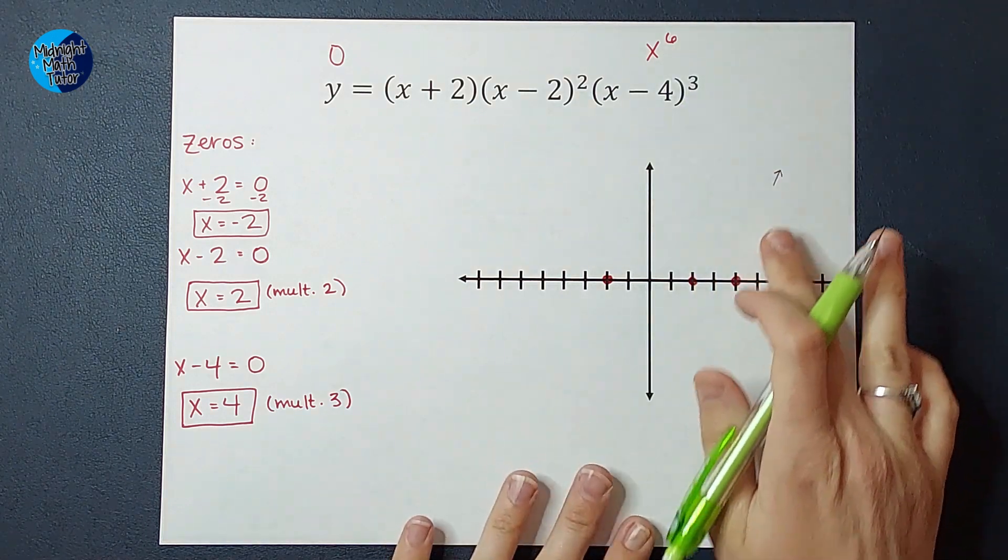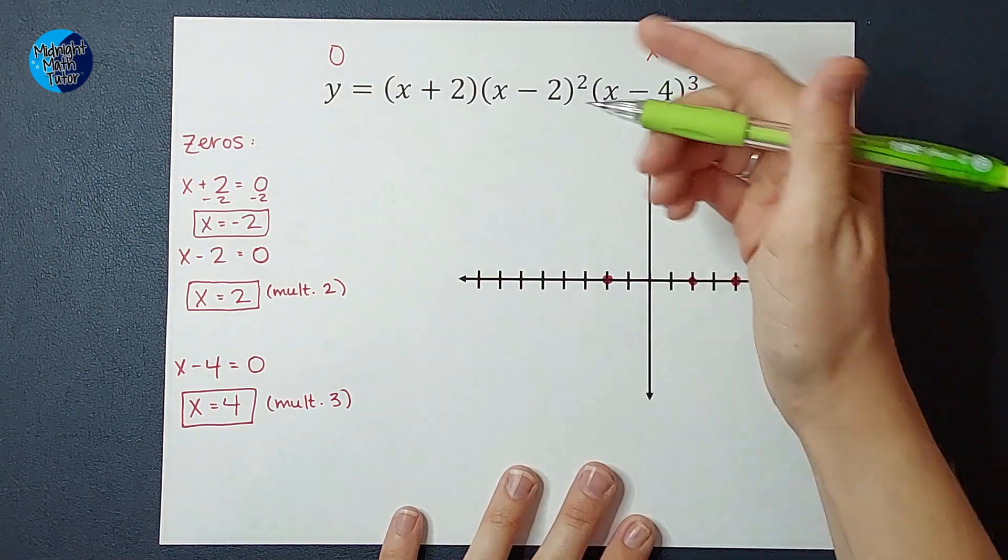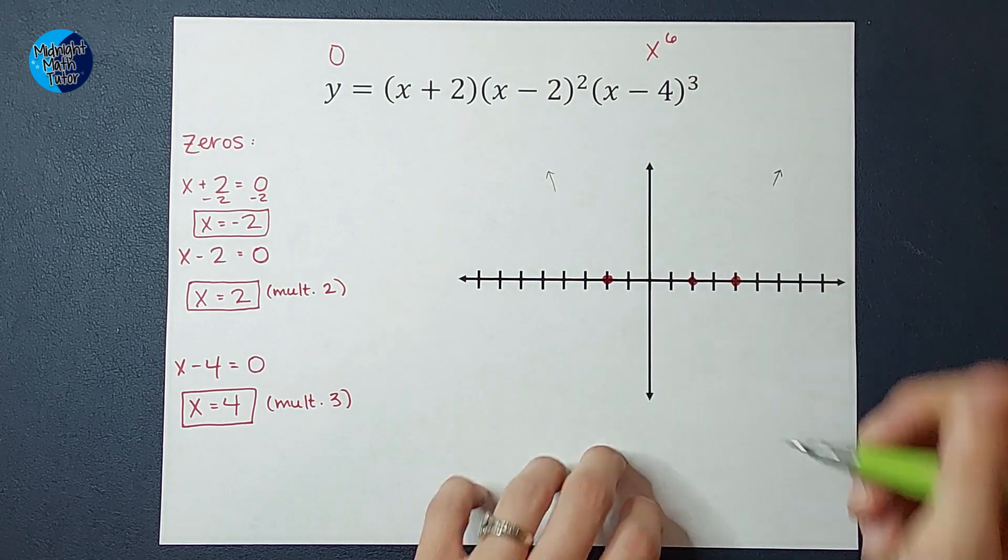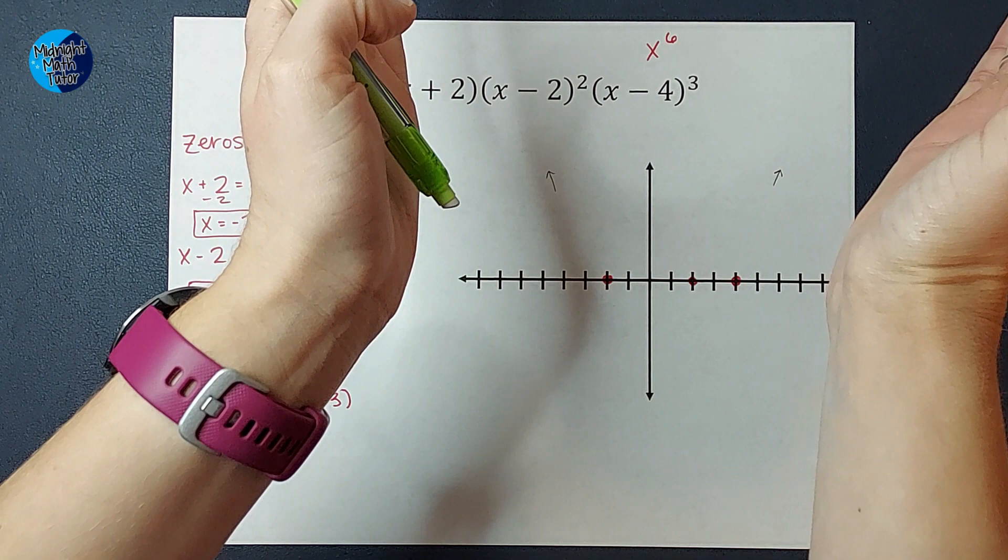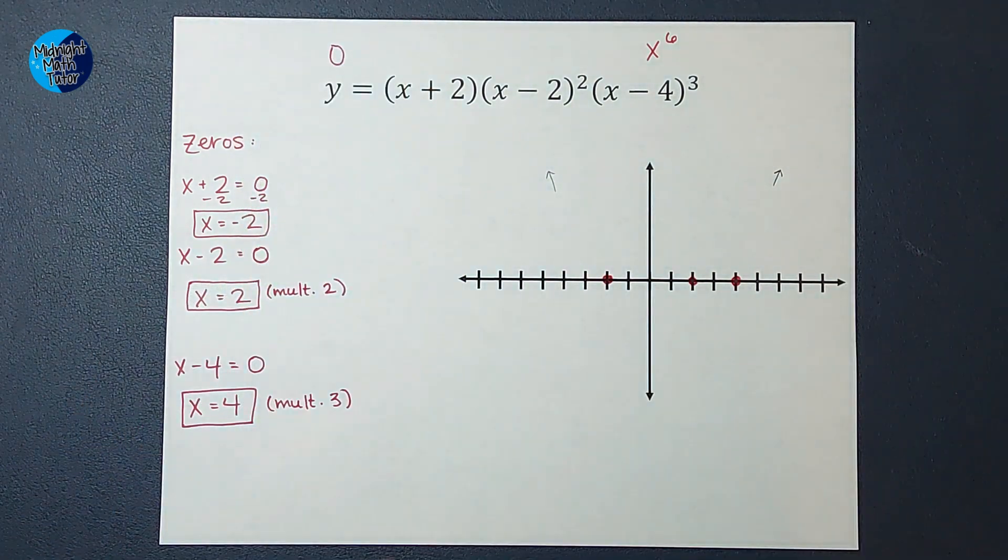Now, ours is even, so since the right side ends up, the left side is also going to end up. So we're feeling pretty good. We have some points. We know which way our direction, which direction our graph ends.